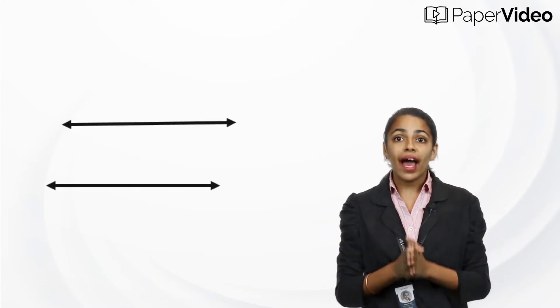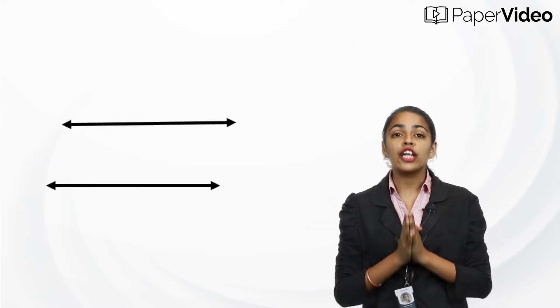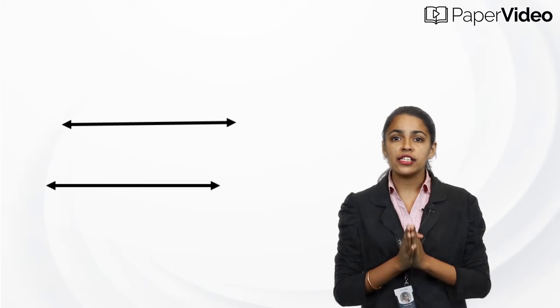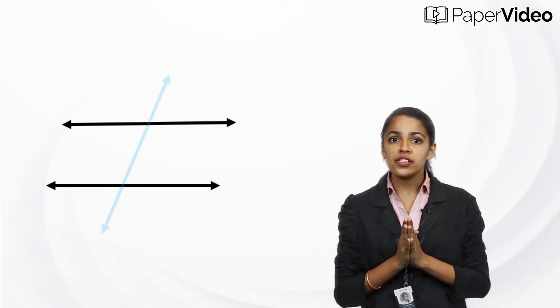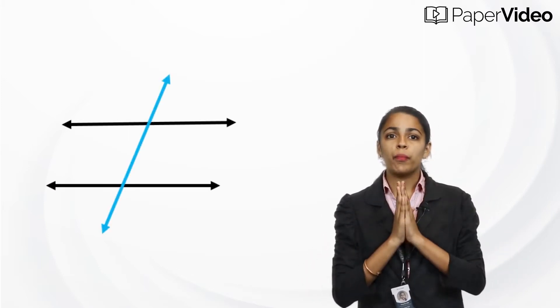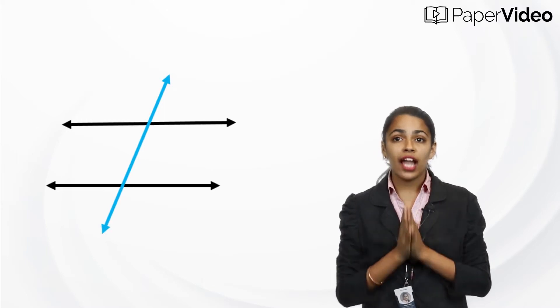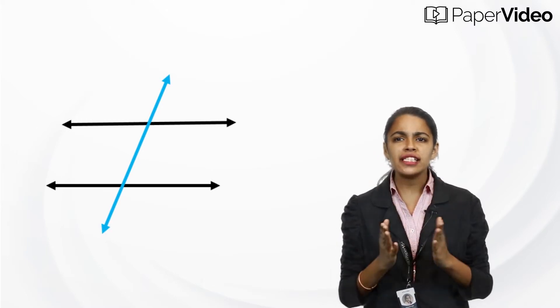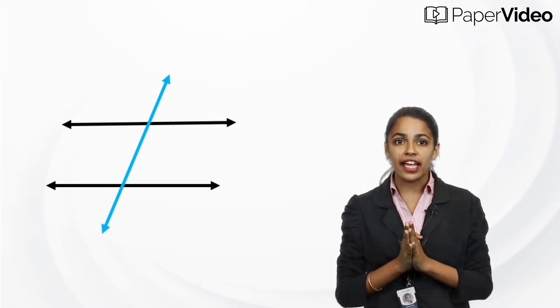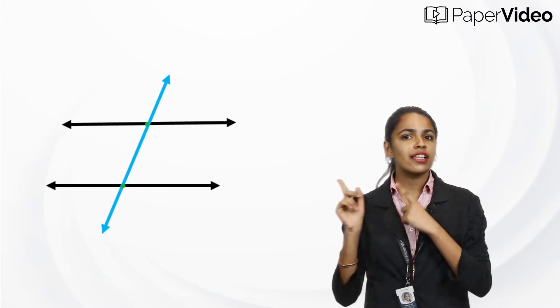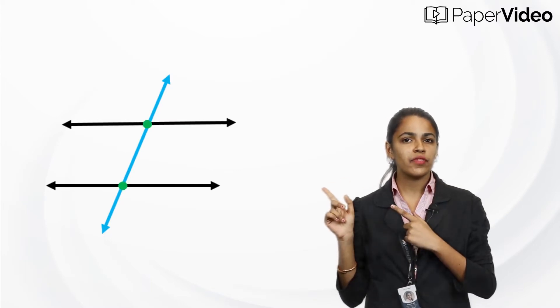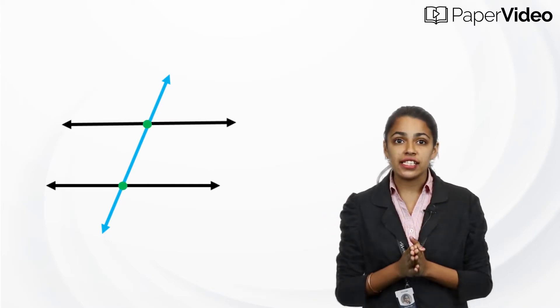Parallel lines are two lines which never intersect with each other, and a transversal of a pair of parallel lines is a line which intersects these lines in two distinct points, like this.